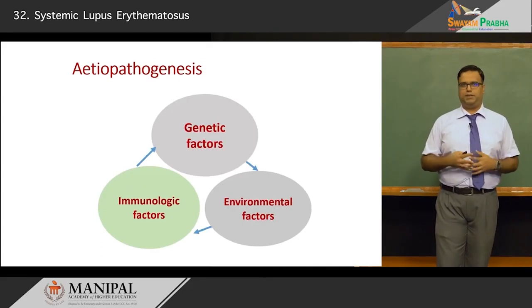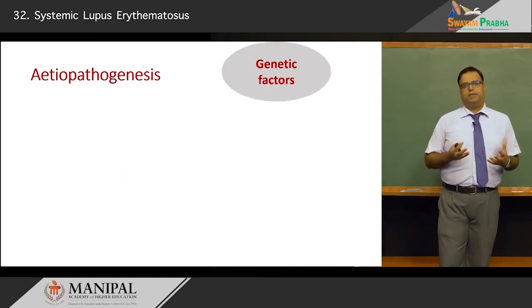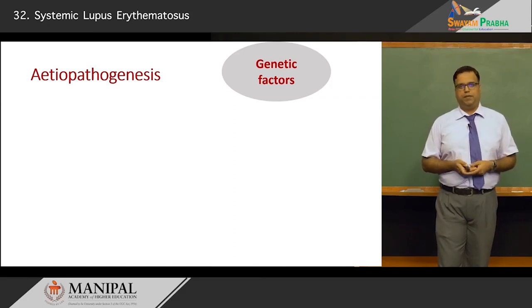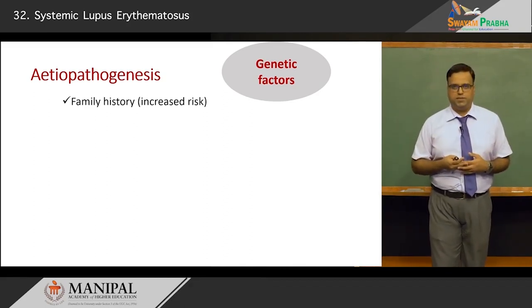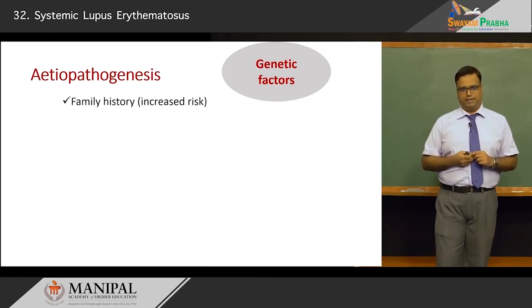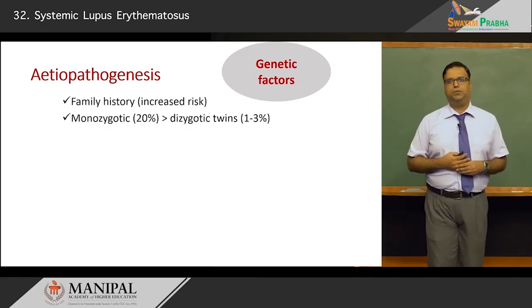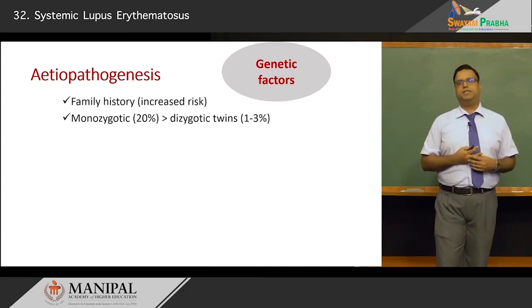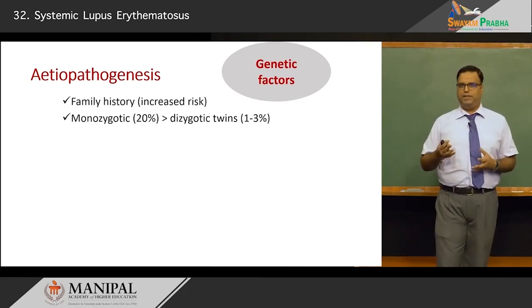SLE is not a single entity — there is a constant interplay between genetic, immunological, and environmental factors. Genetically, a family history is significant; relatives such as a maternal uncle, sibling, or parent may be affected by SLE, clearly indicating a genetic link. Studies show prevalence in monozygotic twins is very high compared to dizygotic twins where it hovers around 3%, clearly demarcating strong genetic factors.